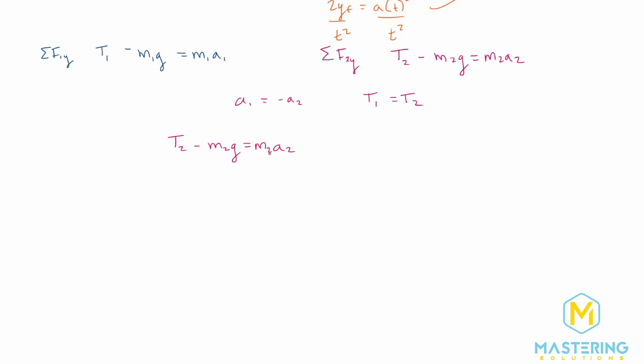So we have tension 2 minus m2g is equal to m2a2. But we want to isolate this, okay, so I'm just rewriting it. And then now we have the formula for block 1. So block 1, we have t1 minus m1g is equal to m1a1. We need to solve one of these, either block 2 or block 1. It doesn't really matter which one, but we need to solve one of them for tension and then plug it into the other equation. So let's solve the top one, block 2 for tension.